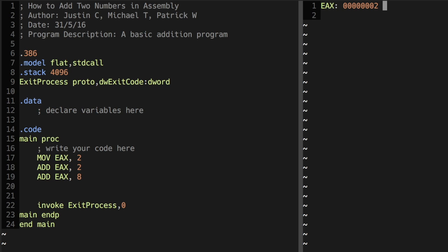Now that we have the value of 2 in our register EAX, we now want to add 2 to it. And we do this using the instruction, add EAX, 2. And this then updates the value of the register to 4, as we can see here.